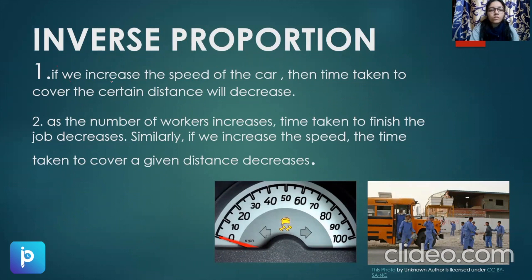So if we increase the speed of a car, then time taken to complete that certain distance decreases. Right? Or if we increase the number of workers in the factory, so time taken to complete a certain amount of work to finish that job will decrease. So we can see that if one quantity is increased, the other decreases.